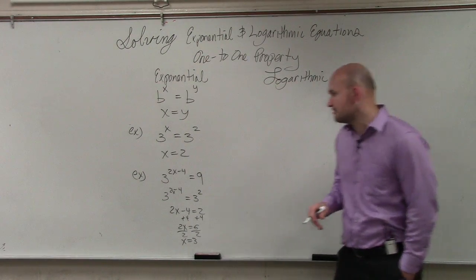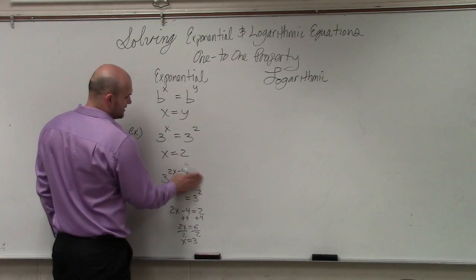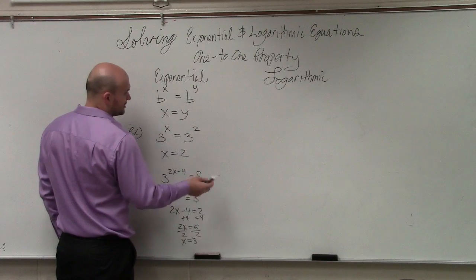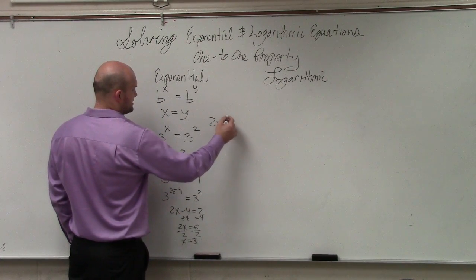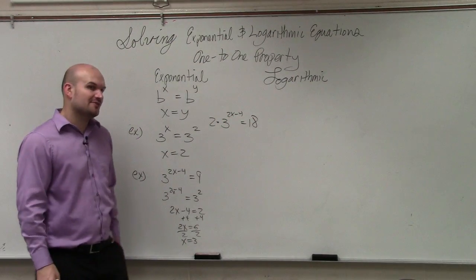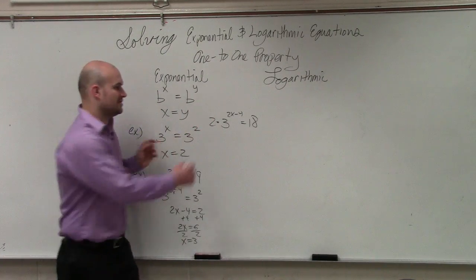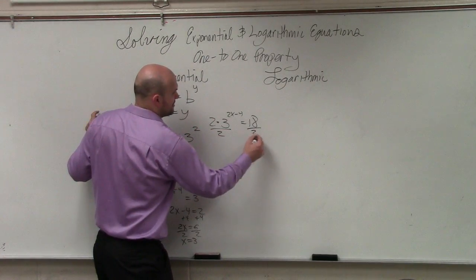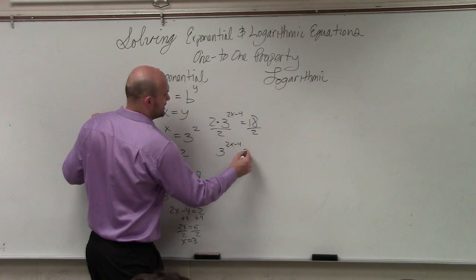Another thing just to also remember is, pretend if this was another example, just to let you guys know, is if I had, like, 2 times 3 to the 2x minus 4 equals 18, the main important thing, if you're going to use the one-to-one property, is to solve for your exponent. So therefore, I would have to divide by 2 on both sides, then I'd have 3 to the 2x minus 4 equals 9.